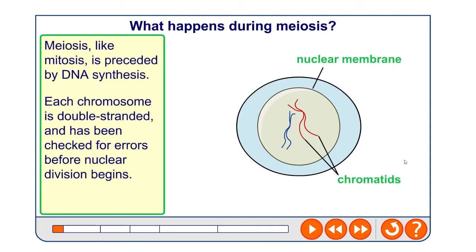Before this takes place there is DNA synthesis, just like mitosis, so each chromosome is double-stranded and gets checked for errors before the nuclear division begins. We'll look at issues arising from meiosis and from mutations later, but the error-checking is something that is attempted to be prevented at this point.